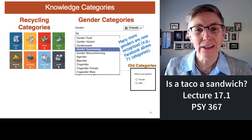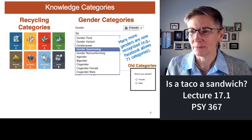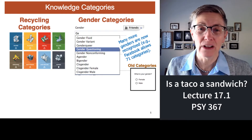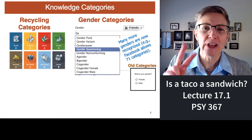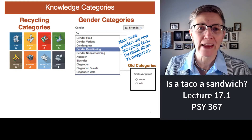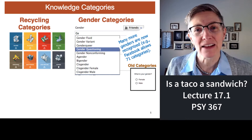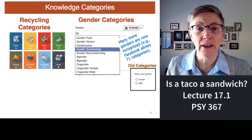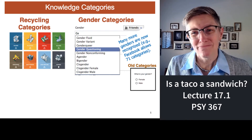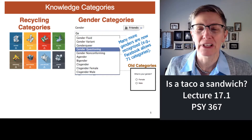In the old days when Facebook originally started there were two categories of gender — either you were male or female. Now Facebook has 71 categories of gender. That right there is an indication that something's complicated.